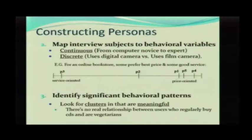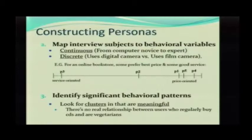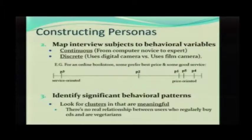Let's take a look at some variables. There are actually two main types of variables: continuous and discrete. Continuous is basically where your range does not have distinct steps — you have more of a smooth curve or smooth line. For example, going from computer novices to computer experts; there are people at all levels in between. Discrete are ones where you can see it as steps — someone who uses a digital camera versus someone using a film camera, or someone who uses both. Those are very discrete categories.